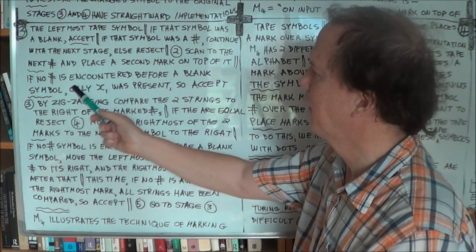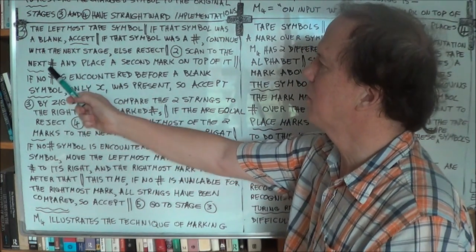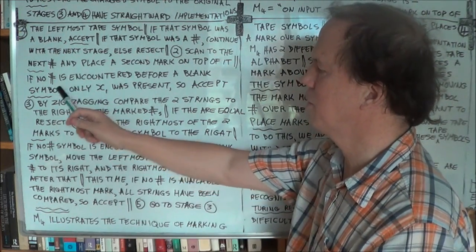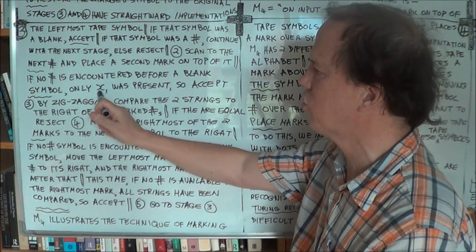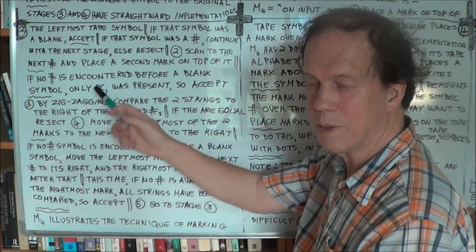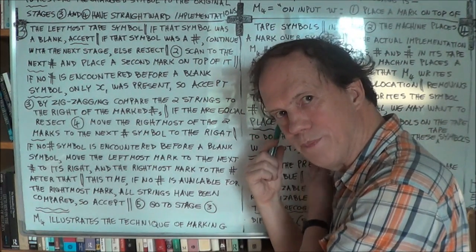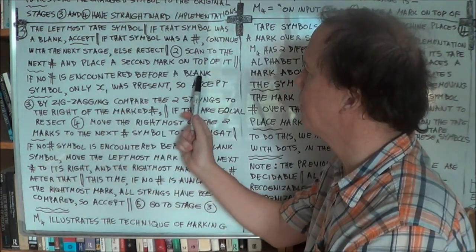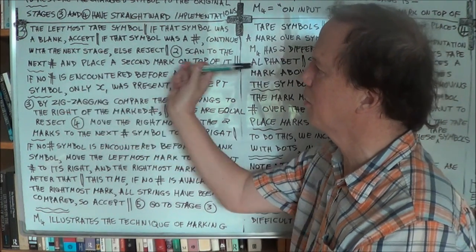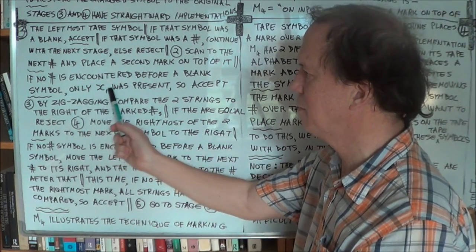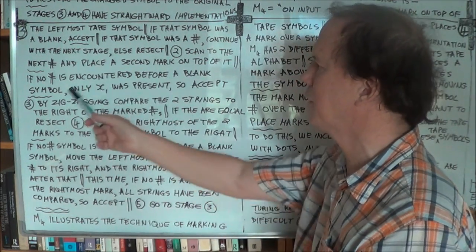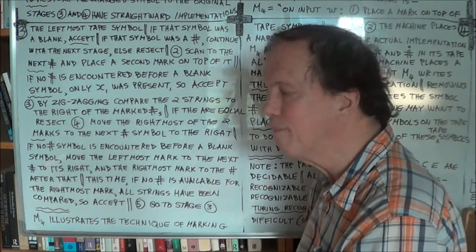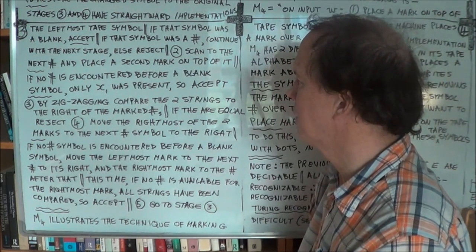Now, if there's no hash before a blank — that's another fringe case. You go scanning for the second hash, but say you get a blank before that hash the first time through. Then you only have one string. Remember, the very right-hand symbol is not a hash — it's just the last binary symbol of your last string. So if you get a blank before the first time you encounter a hash, then there was only one string, so it must be different from the others, and you accept. If there is a second hash, that means there are at least two binary strings.